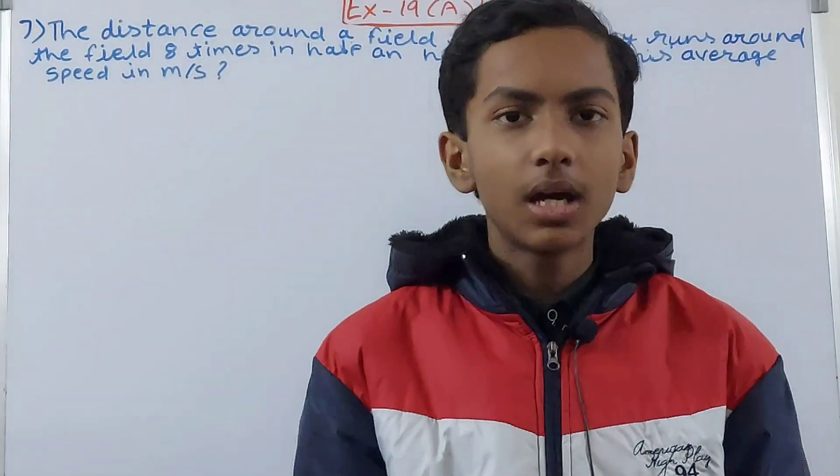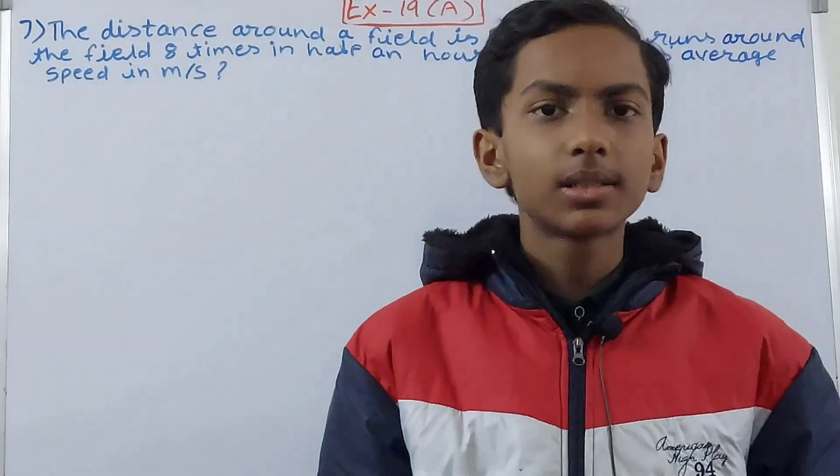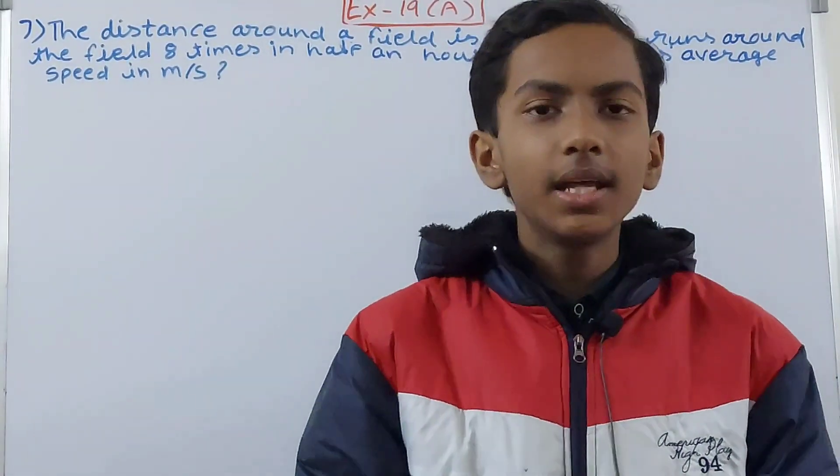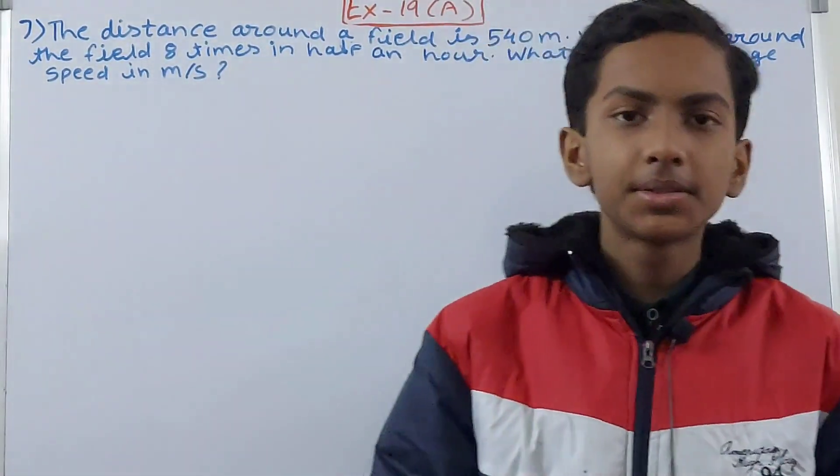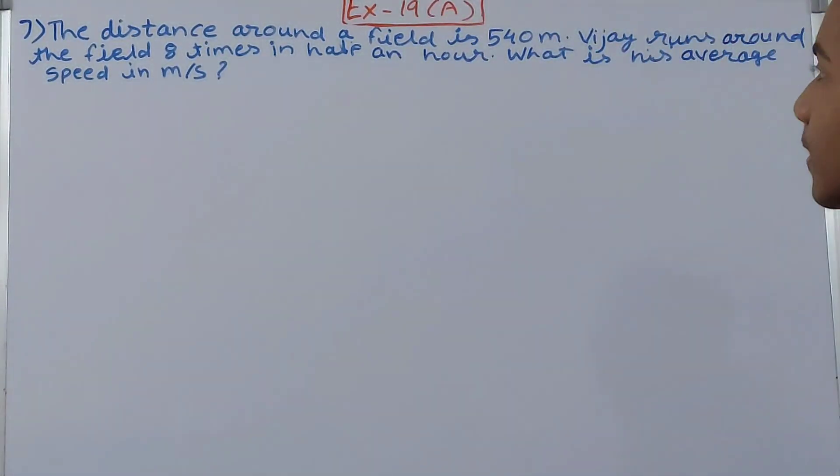Hello friends, welcome back to my YouTube channel. In this video we are going to solve ICSE Mathematics Class 7, Chapter 19, Speed Time and Distance, Exercise 19A. This is question 7. It says the distance around the field is 540 meters.